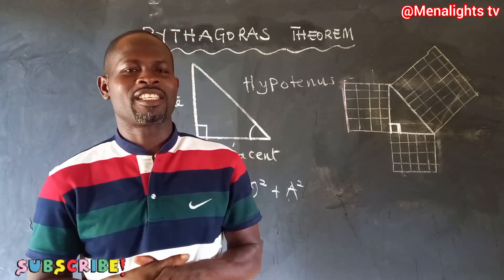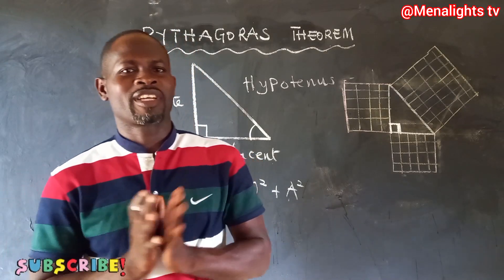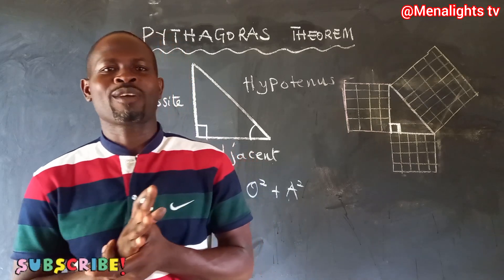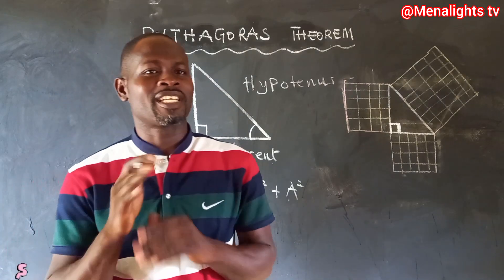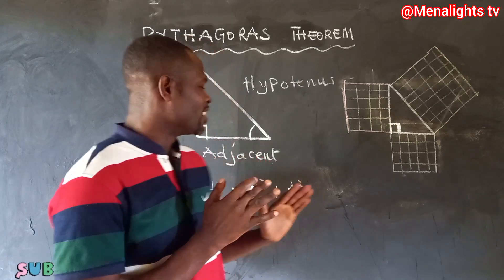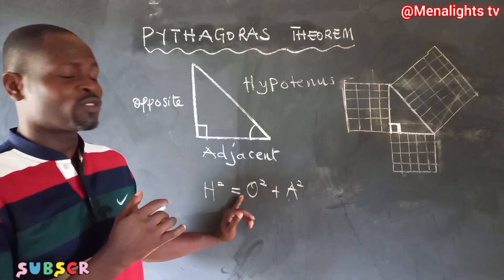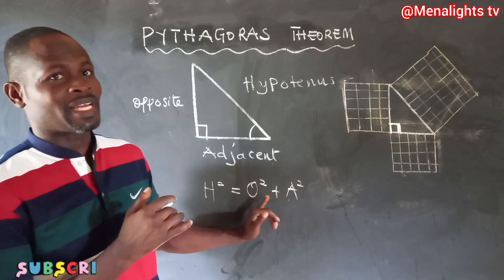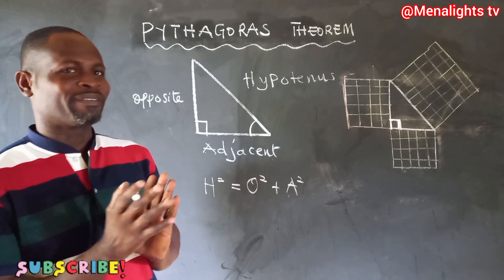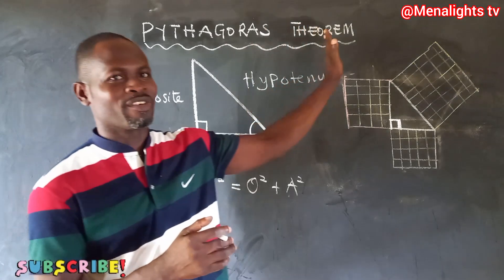Welcome again to Menalize TV. This time we are looking at the Pythagoras theorem. Pythagoras was one of the greatest mathematicians of all time and he came up with this formula: the hypotenuse squared is equal to the opposite squared plus the adjacent squared. That is why they named the formula after him as the Pythagoras theorem.